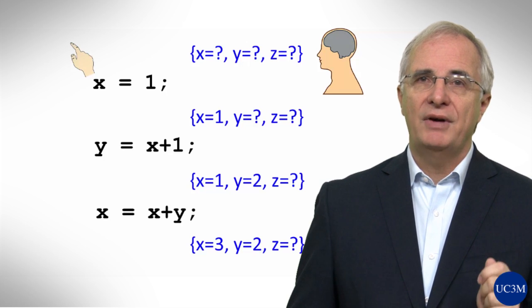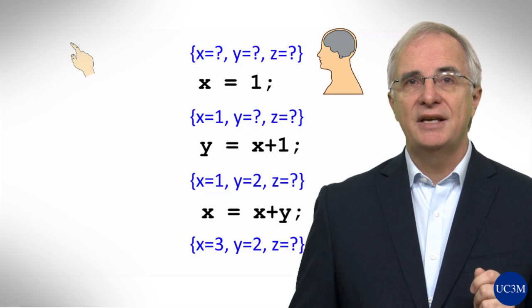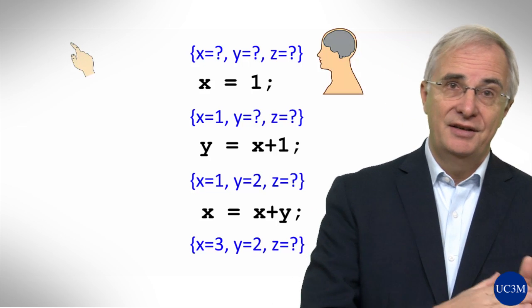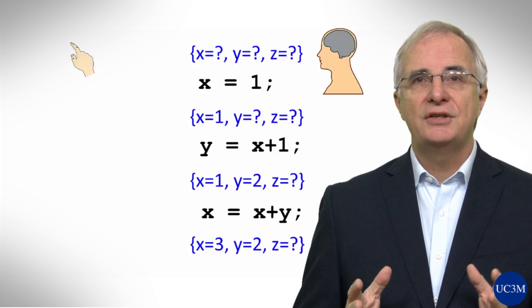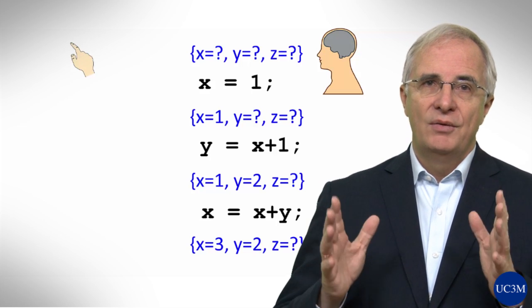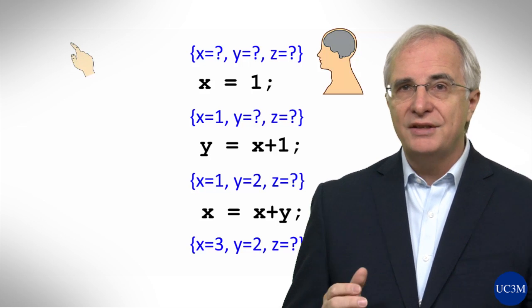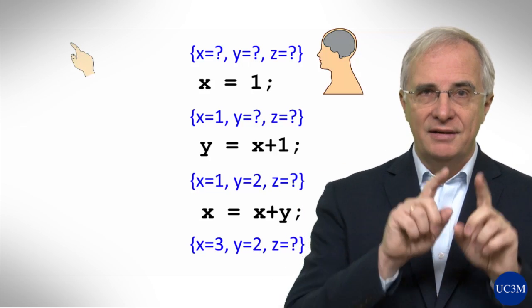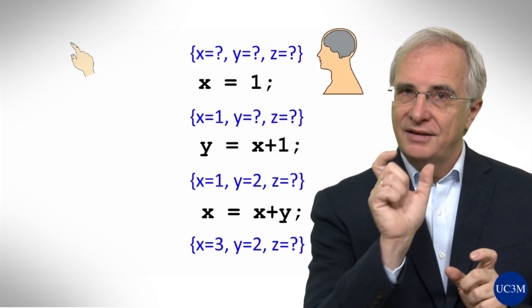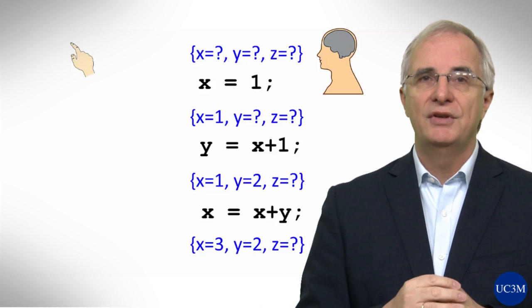The variables together with the values is what we call state. An assignment statement, therefore, transforms a state into a state. Here is a notation to express what we are thinking of. You can imagine the states written between the statements. You see that this notation has curly brackets and the values of the different variables between these curly brackets.